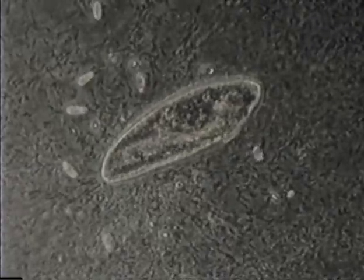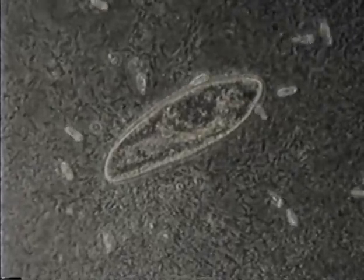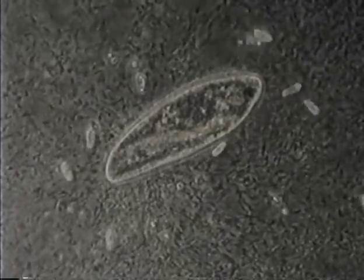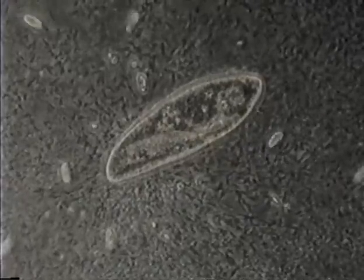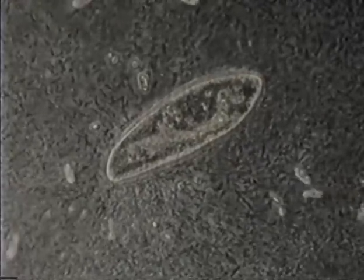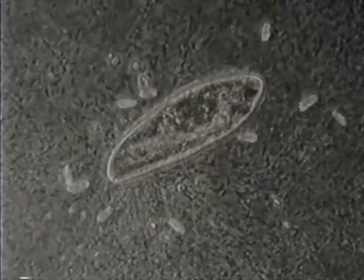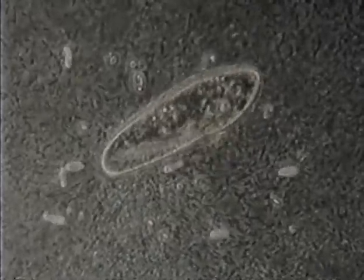The small single-celled protozoa are using cilia to swim. The larger organism paramecium is using cilia to create currents in the water for feeding. If you look carefully, you will see the small protozoa become caught in these feeding currents near the paramecium.